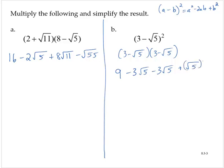And so we now have 9, combining these like radicals, that's minus 6 times the square root of 5, and the square root of 5 squared is 5. Combining the like terms, we have 9 plus 5 is 14, so 14 minus 6 times the square root of 5. Now these are not like radicals, so they cannot be combined any further, and so we would leave the expression at that point.